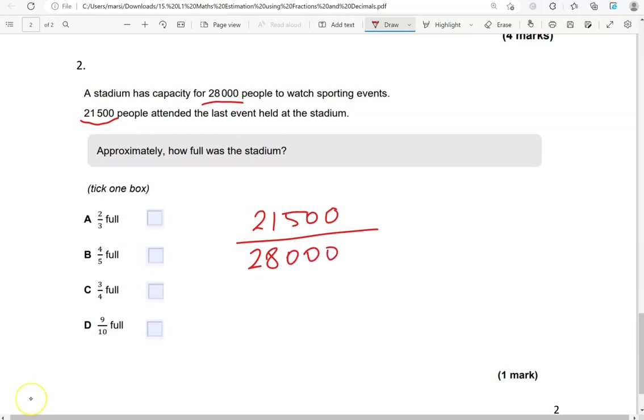So we've got 21,500 out of 28,000 people total. So looking at these numbers, I've got 21 and 28, and I recognize these as multiples of 7. So this would be approximately 21 divided by 7 gives us 3, 28 divided by 7 gives us 4. So that gives me 3 quarters. So that's option C.